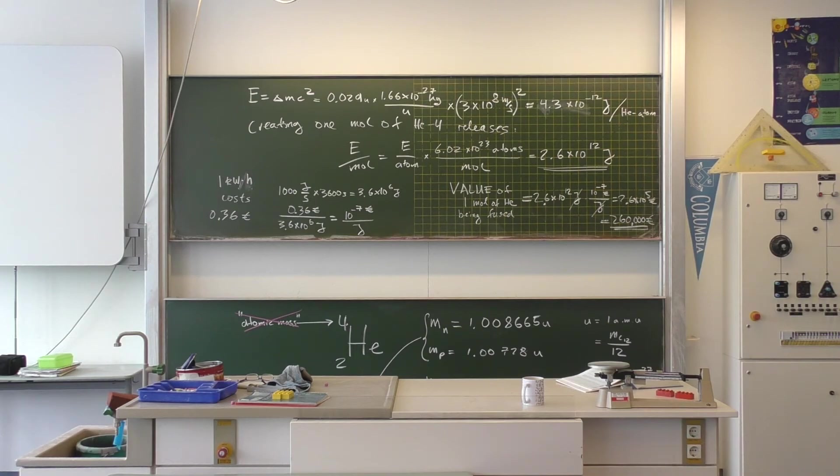So, creating one mole of helium. Four grams. Four grams of helium. You start with four grams of hydrogen. You convert that into four grams of helium. The energy is worth 260,000 euros. Now, I slightly exaggerated. But even if I exaggerated by a factor of 10, which I didn't, we're still looking at basically a decent car for creating four grams of helium.